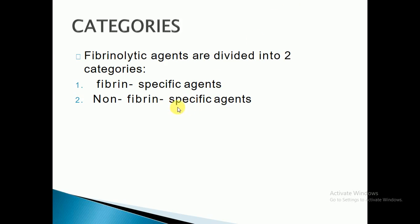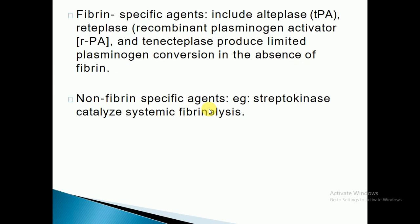Fibrinolytic agents are divided into two categories. The first one is fibrin-specific agents, and the second one is non-fibrin-specific agents. Fibrin-specific agents include alteplase and reteplase, which are recombinant plasminogen activators, and tenecteplase, which produces limited plasminogen conversion especially in the absence of fibrin. Non-fibrin-specific agents include streptokinase, anistreplase, and systemic fibrinolysis.